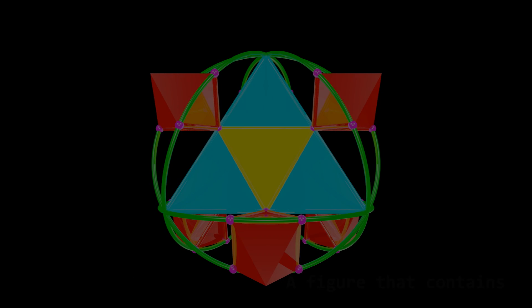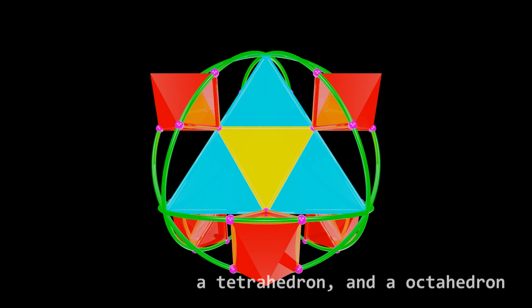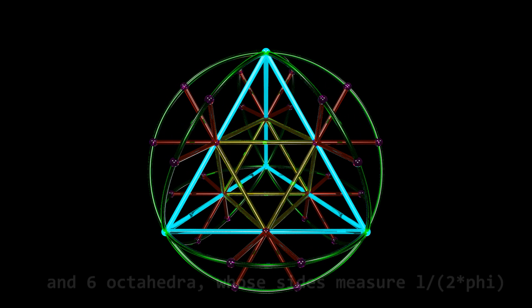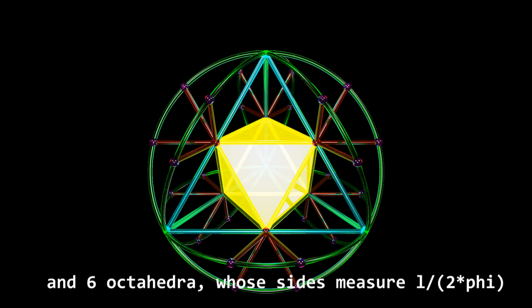In Chapter 7 we discover the divertohedron, a figure that contains a tetrahedron and an octahedron, whose side measures half the tetrahedrons. And it also contains 6 octahedra, whose side measure 1 divided by 2 multiplied by phi.